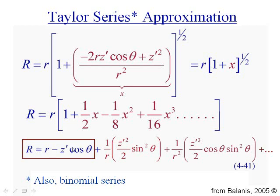And if we note then that x is indeed this quantity, we can then put these terms together and write r as little r minus z prime cos theta plus 1 over r z prime squared over 2 sine squared theta plus 1 over r squared z prime cubed over 2 cos theta sine squared theta. Plus an infinite set of terms actually which continue to behave as 1 over r cubed, 1 over r to the fourth, 1 over r to the fifth, etc. In other words, all higher powers of 1 over r.